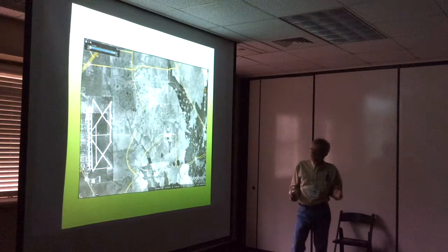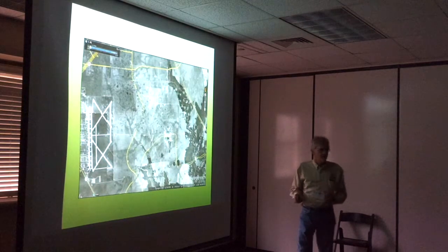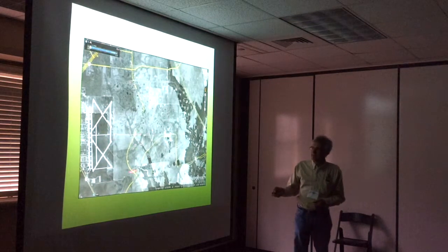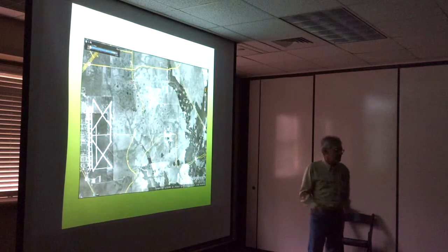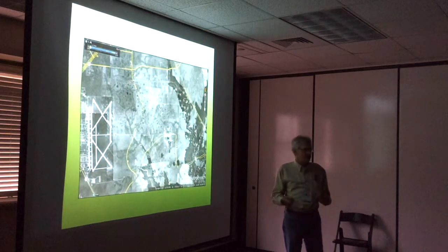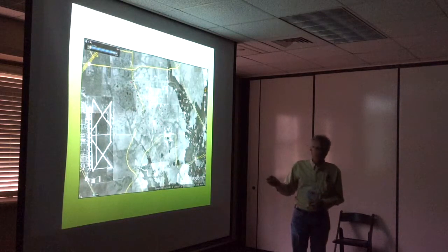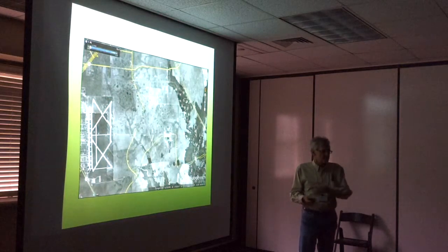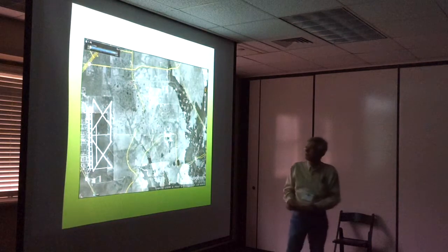What you end up with after a long period of time is a prairie landscape where you have everything from real wet, low sumps dominated by switchgrass and gammagrass — very wet prairies — to much sandier areas with a lot of pimple mounds and little coppice dunes where sand has blown up and formed small sand dunes across the landscape.